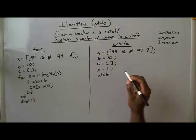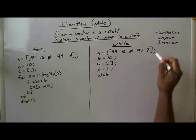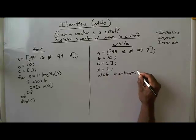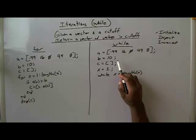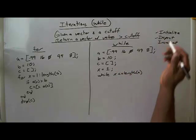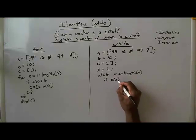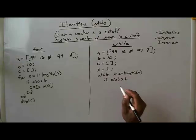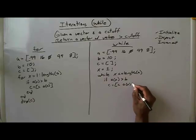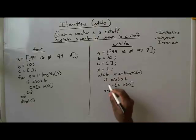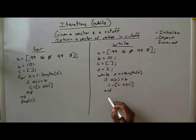Then we put in our while statement. The inspection part checks that x is less than or equal to the length of A — that will make sure x goes through all the values. Then we do our code block: check to see if A indexed at x is greater than B; if it is, we concatenate that value onto result vector C. We end the if statement.